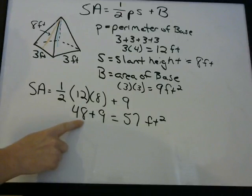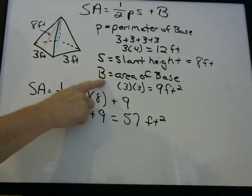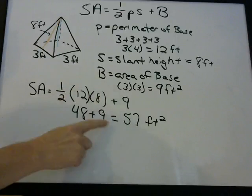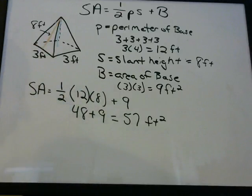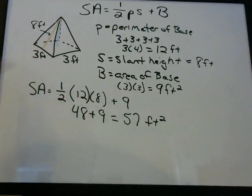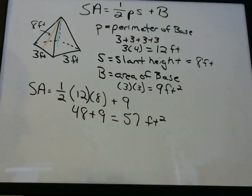The B, area of the base, is giving you the surface area for the bottom. So if the problem says find the surface area of this pyramid but do not include the base — like if you're going to paint something and it's sitting on the ground.